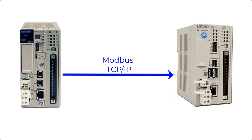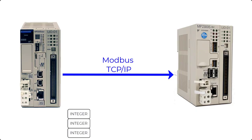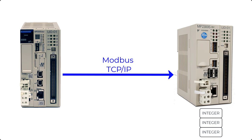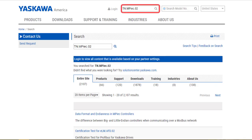When using Modbus, the integer data type is automatically converted at the firmware level, so the Endian function blocks are not needed unless other data types are transferred. More information on Endianness can be found on yaskawa.com in the tn.mpiec.02 app note.